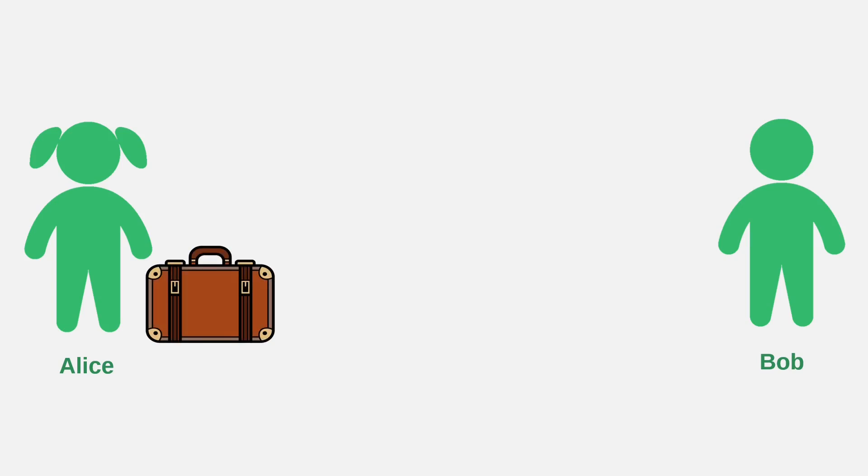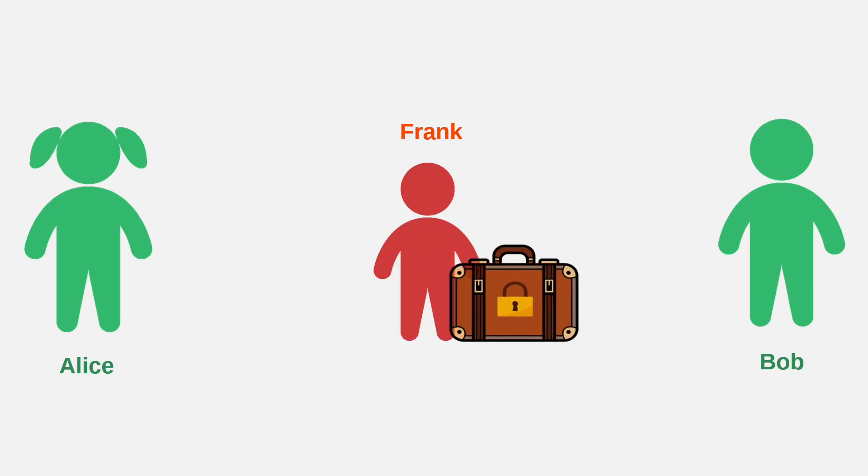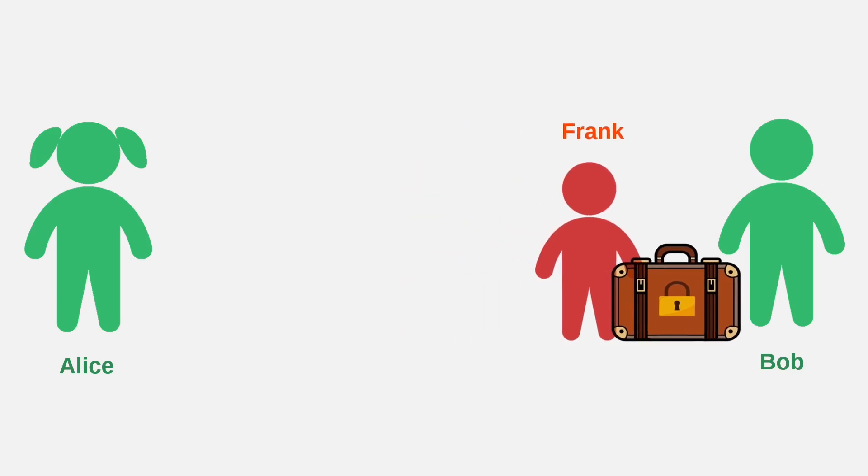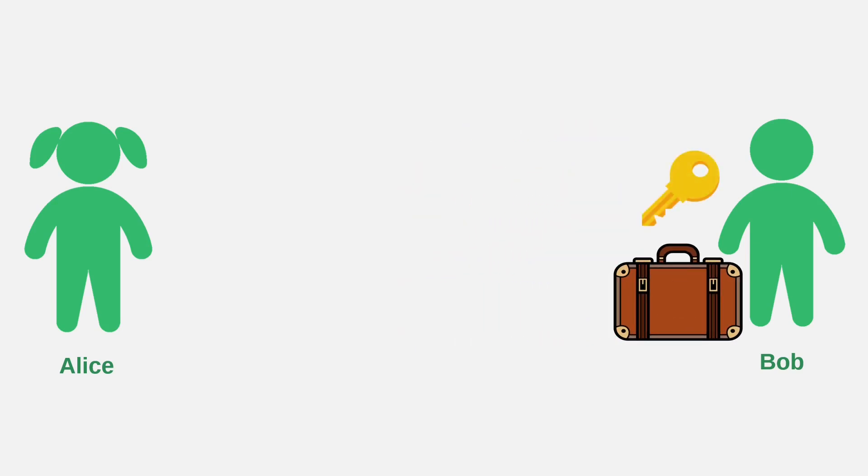Suppose Alice wants to send Bob a suitcase full of sensitive documents. As Alice does not have time to deliver the suitcase herself, she requests Frank for his service. As Alice is concerned about the safety of her documents, she locks the suitcase before handing it over to Frank. After Bob receives the suitcase, he uses a duplicate key to unlock the content.